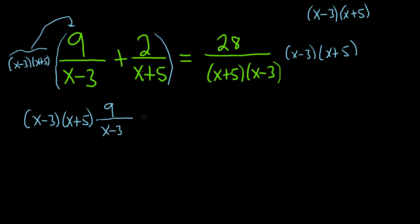And we keep the plus sign. Then we do it again, x minus 3, x plus 5, times this second piece here. So x minus 3, x plus 5, times this whole second piece. So 2 over x plus 5.